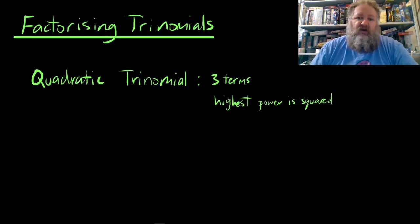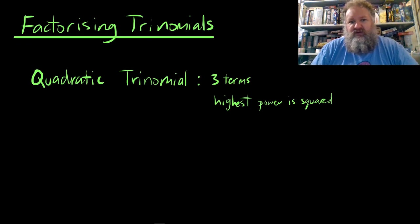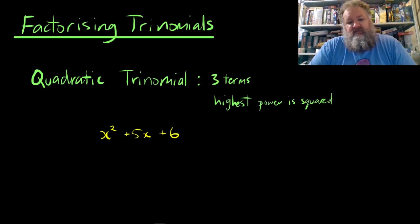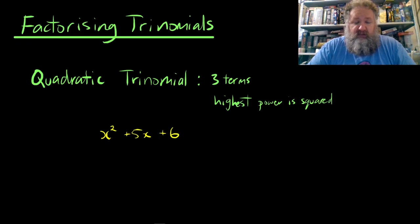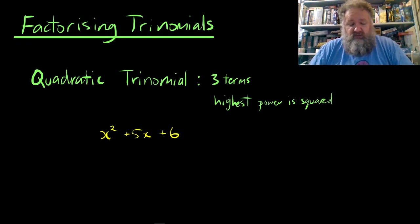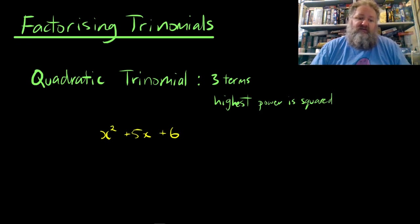If the highest power is greater than two, we're no longer looking at quadratics. In the last video we expanded a binomial and ended up with a quadratic trinomial where x squared is the highest power. It's also very important that the terms are listed in the right order — descending index value: squared, then the unknown, then the constant.